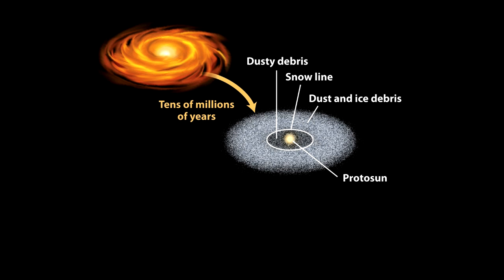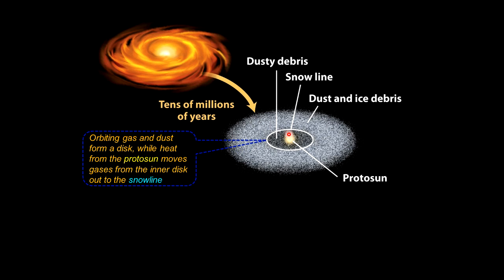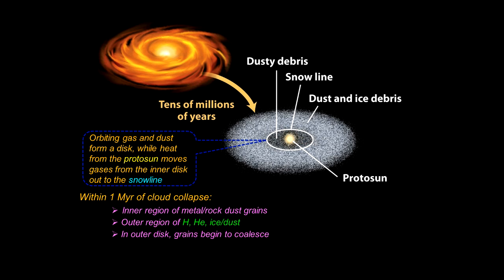The gas and dust orbiting the protosun forms into a disk, and it starts to differentiate. The heat from the protosun pushes the gases out over the snow line, where they precipitate out into the outer disk. That outer disk has ice and dust intermingled; the gas has been pushed out of the inner disk. Within about a million years, the inner region has the metal, rock, and dust, while the outer region consists of grains — the volatiles in solid form along with metals and rock.